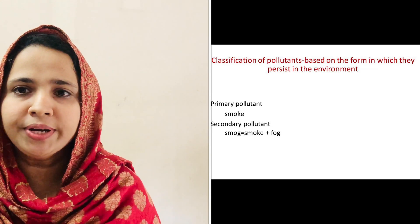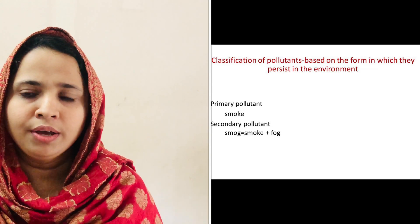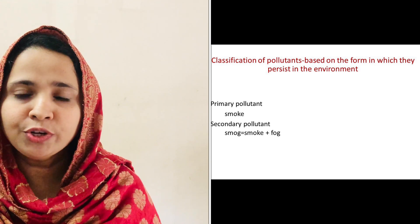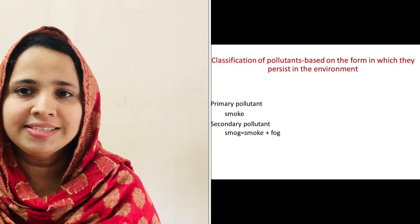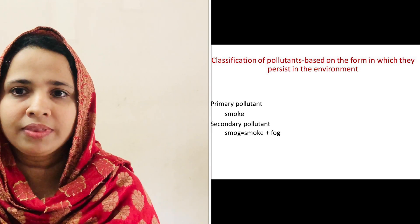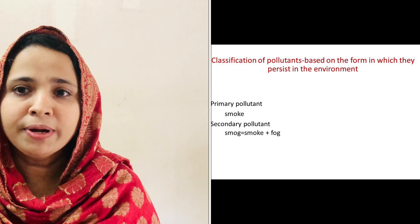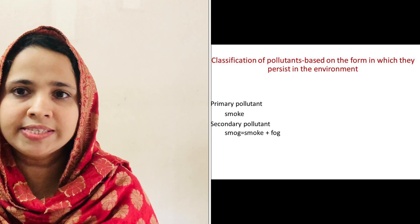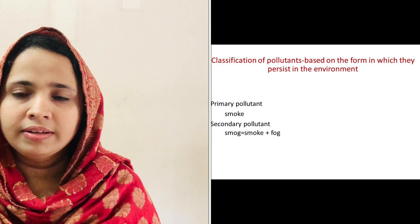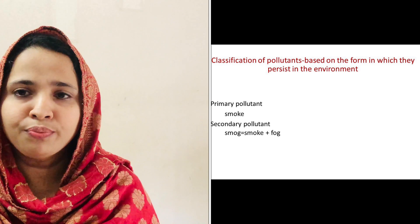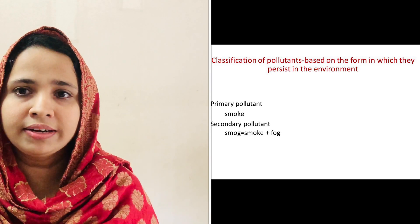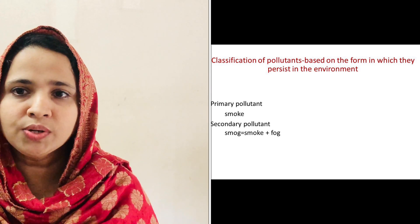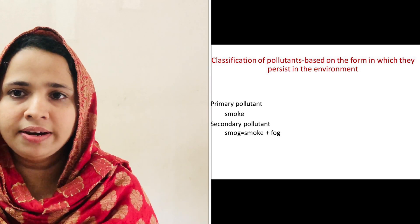Another classification of pollutant is based on the form in which they persist in the environment. They are classified into two: primary pollutants and secondary pollutants. Primary pollutants are directly emitted from the source — for example, smoke, dust, etc. Secondary pollutants are formed when primary pollutants react in the atmosphere — for example, ozone, sulfur trioxide, etc. These are the different classifications of pollutants.